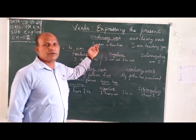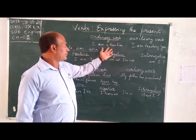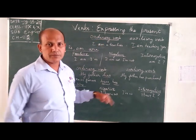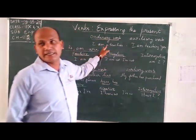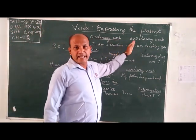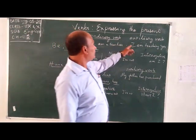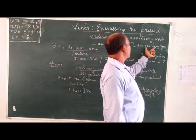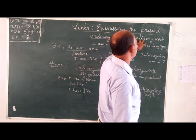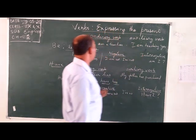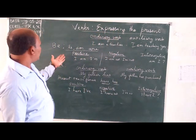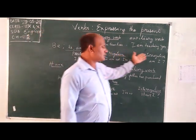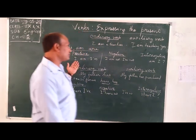An ordinary verb — just like 'I am teaching.' Here 'am' is an ordinary verb. But an auxiliary verb — just like 'I am teaching you' — here 'am' helps the main verb 'teaching,' so 'am' is the auxiliary verb. Sentences have different types: positive, negative, interrogative, also imperative and exclamatory. For 'I am,' the negative is 'I am not,' and the interrogative puts the helping verb first.